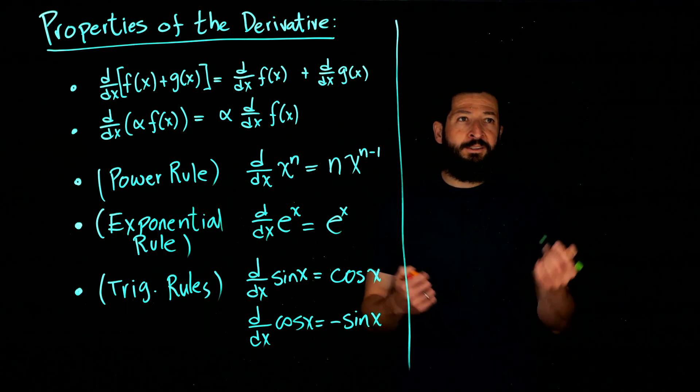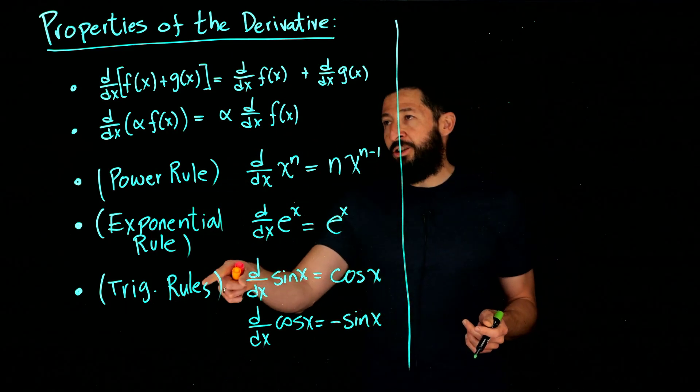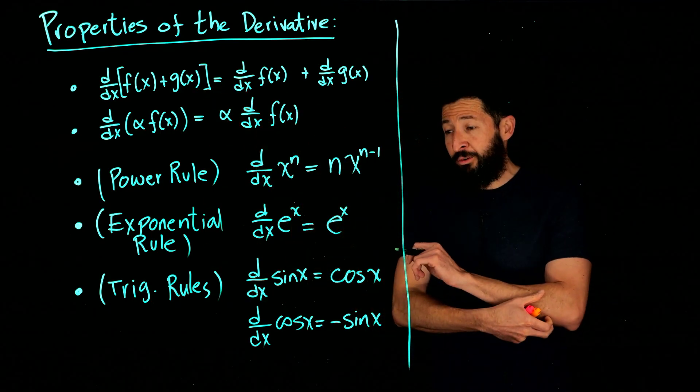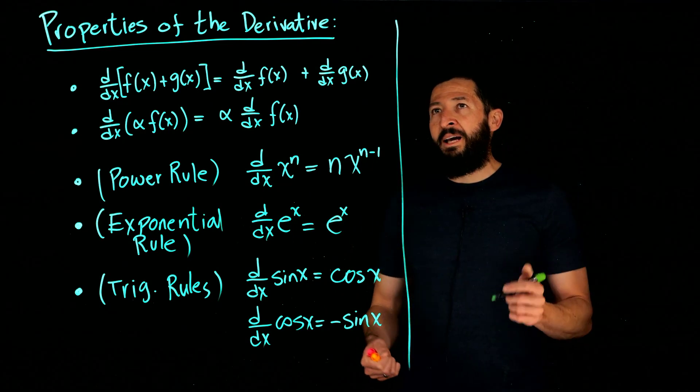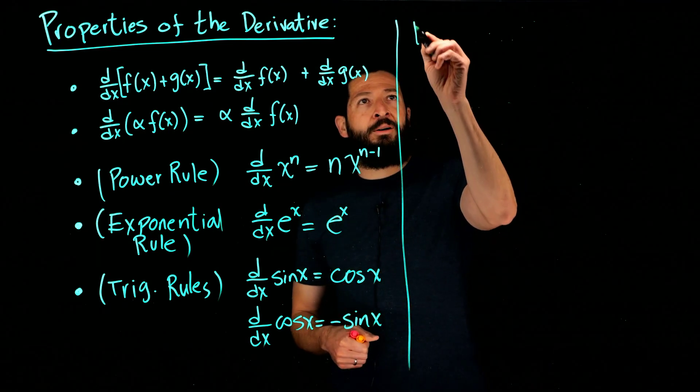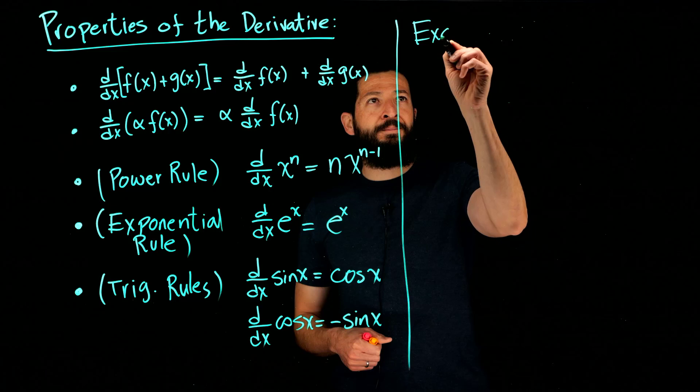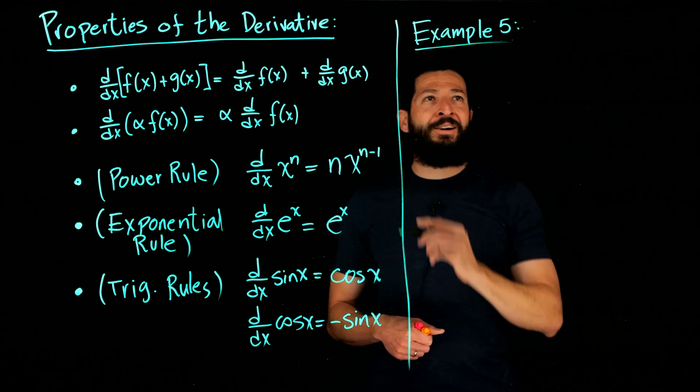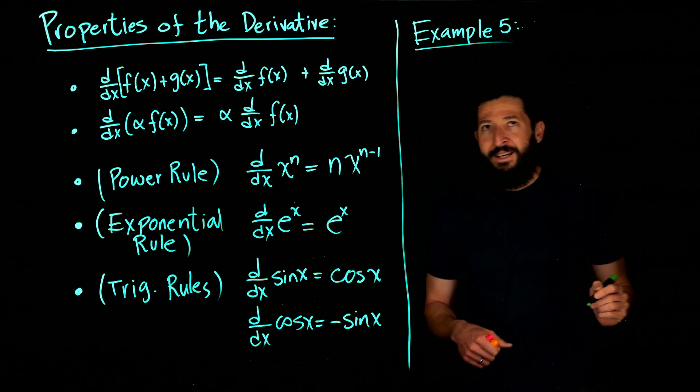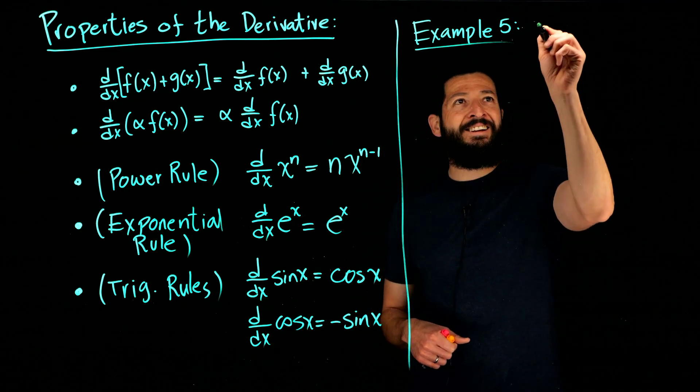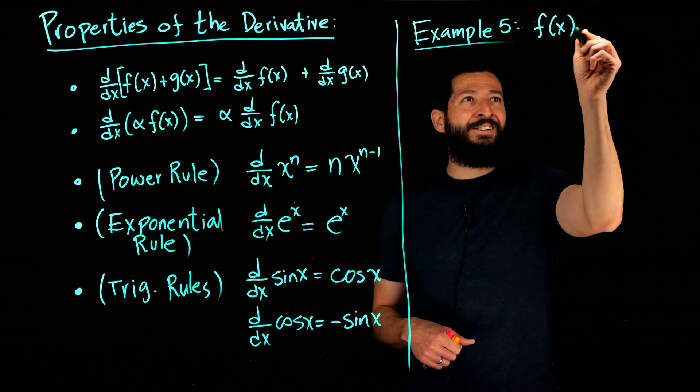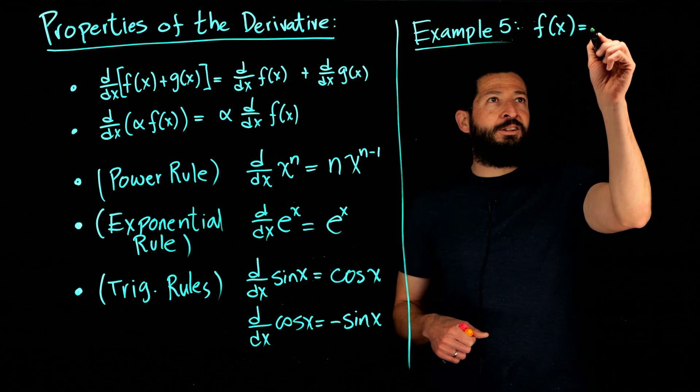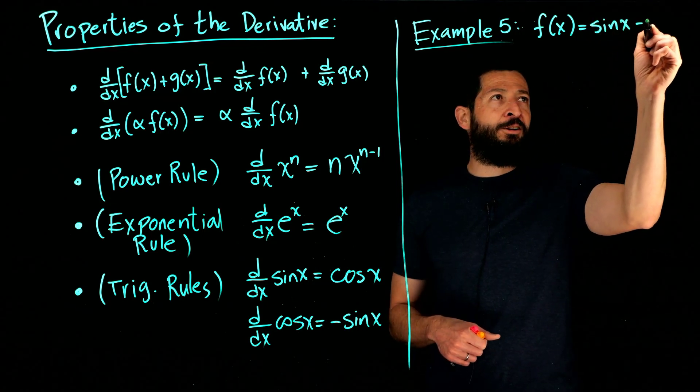So let's go ahead and use them with the linearity rules and do some examples. What number are we on, example 5 I think? If not, well I miscounted. So let's say our function is something just straight up sine of x minus 2 cosine of x.